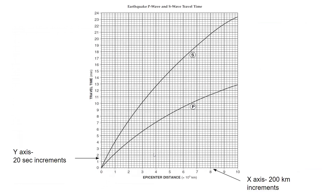On the x-axis, each small increment is 200 kilometers, and 1 represents 1,000 kilometers (×10³), so 2 = 2,000, 3 = 3,000, and so on. The y-axis shows time in minutes with increments of 20 seconds — so 0, 20 seconds, 40 seconds, 60 seconds equals 1 minute.